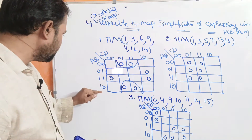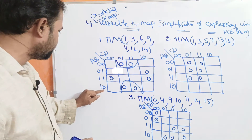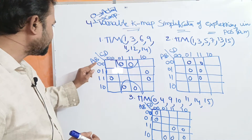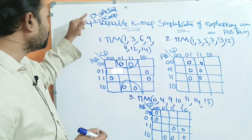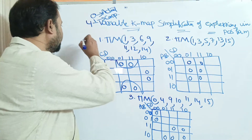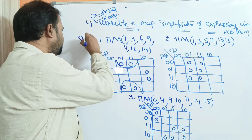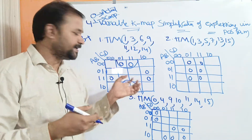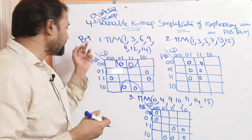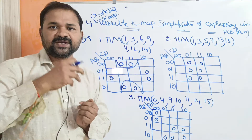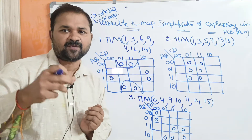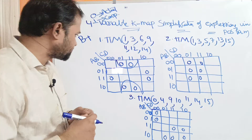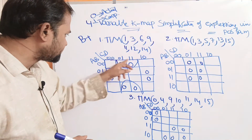If we observe 0010, the second zero is common. The second zero is B. Zero means actual variable in POS form, so we write B plus. This is because it is a max term, and max terms require the OR operation on the literals. If we observe cells 0110111, the second one is common.